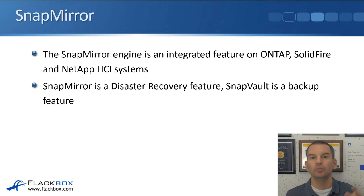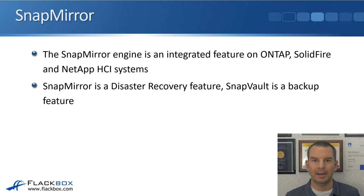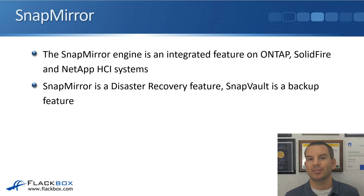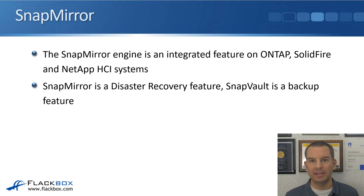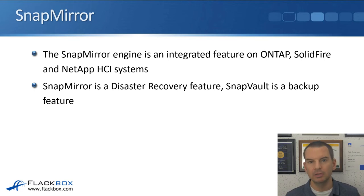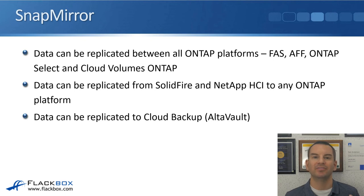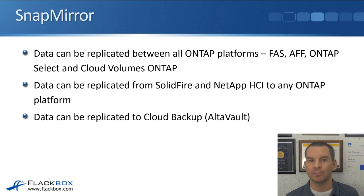Let's look at some of the tools and features from NetApp that help enable this. The first one is the SnapMirror engine, which you'll learn about in detail later in this course. To give a quick overview: it's an integrated feature on ONTAP and also on the Element OS systems — that's SolidFire and NetApp HCI. There are two parts: the SnapMirror feature, which is used for disaster recovery, and SnapVault, which is a backup feature. The SnapMirror engine has been available for a long time on ONTAP and has also been ported over to Element OS systems.